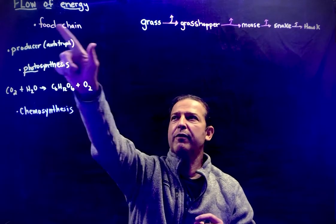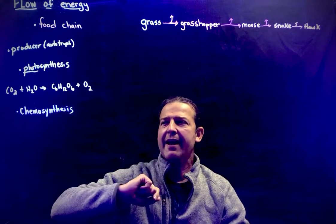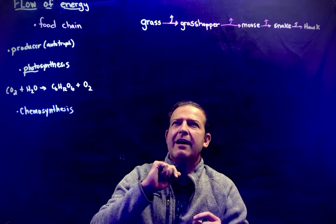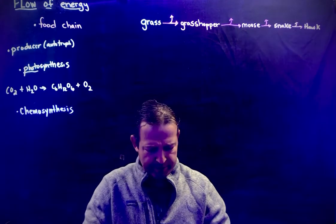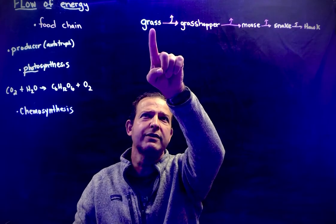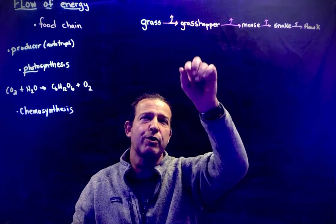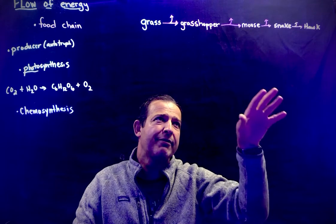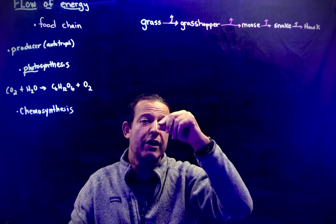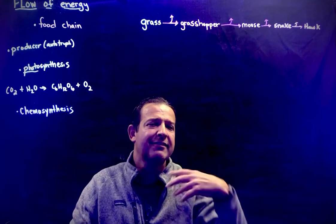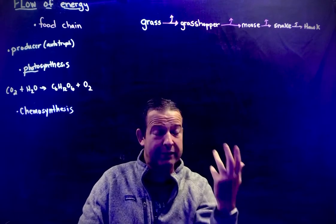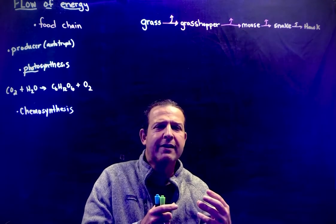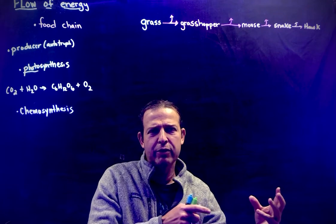Food chains are always going to start with a producer. In our example, the producer is grass. What a food chain is showing you is essentially energy levels — it's showing feeding relationships. The reason these things are consuming other things is they need energy. Grass, because it's a producer, converts radiant energy from the sun into chemical energy, and then the consumers are going to consume that.